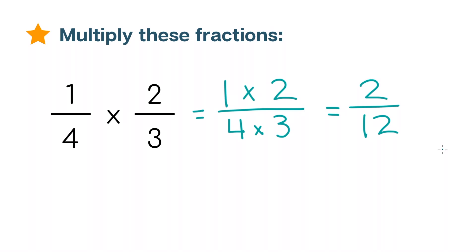Now we're not quite done with this one yet because the answer can actually be simplified because both the numerator 2 and the denominator 12 are divisible by 2. So let's divide both numbers by 2. 2 divided by 2 equals 1, and 12 divided by 2 is 6. 1 over 6 is our final answer.